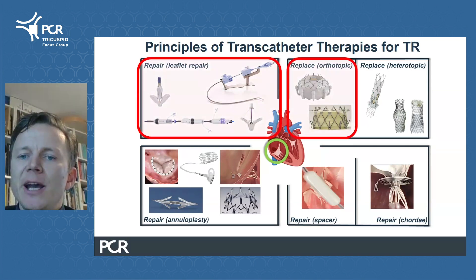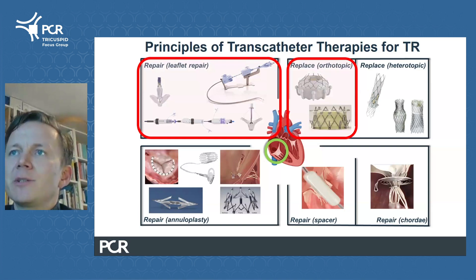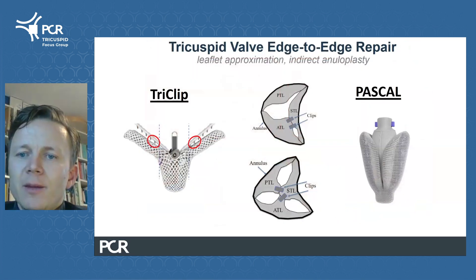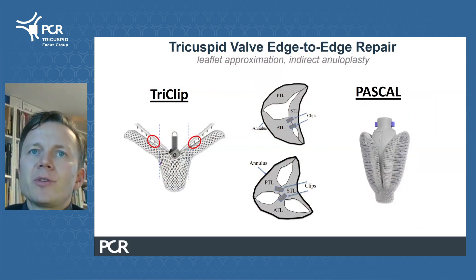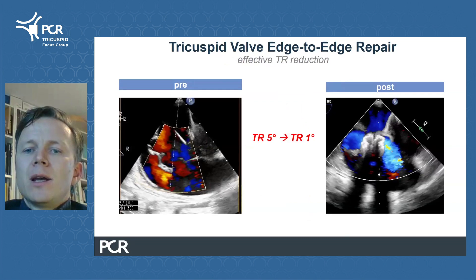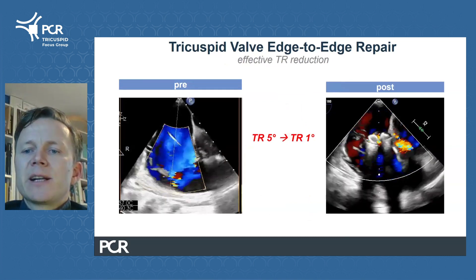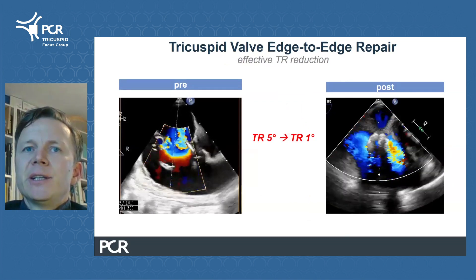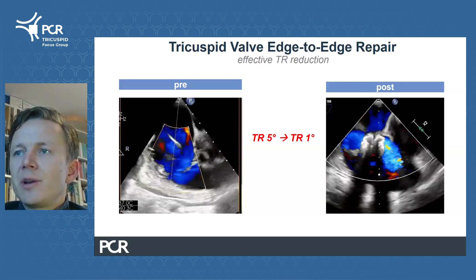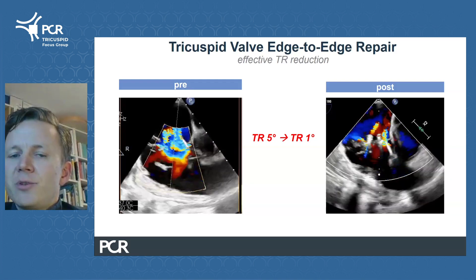Namely leaflet repair, and also touch on interventional replacement. The principle of tricuspid valve edge-to-edge repair is the reduction of the regurgitant orifice area by leaflet approximation and also indirect annuloplasty. This can be quite effective in clinical practice, as seen here going from very severe TR to very mild residual TR after edge-to-edge repair.